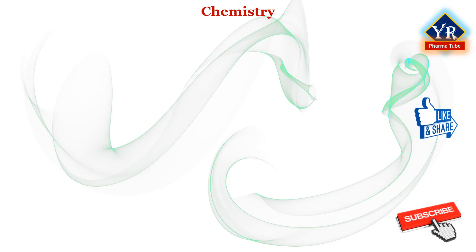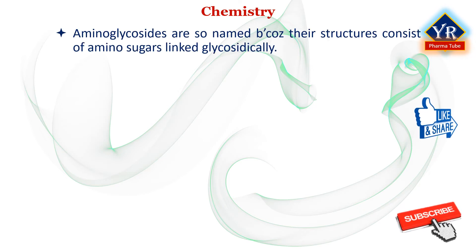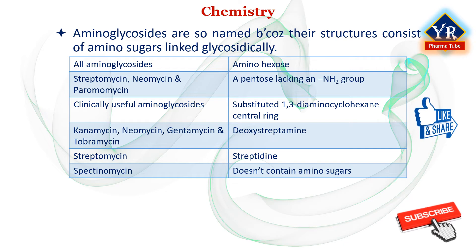Coming to the chemistry of aminoglycosides: aminoglycosides are so named because their structures consist of amino sugars linked glycosidically. In other words, the aminoglycosides consist of two or more amino sugars joined in glycosidic linkage to a hexose nucleus, which usually is in a central position. All aminoglycosides have at least one amino hexose, and some have a pentose lacking an amino group — for example, streptomycin, neomycin, and paromomycin. Additionally, each of the clinically useful aminoglycosides contains a highly substituted 1,3-diaminocyclohexane central ring.